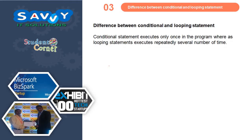The difference between a conditional statement and a looping statement: a conditional statement executes only once in the program, whereas a looping statement executes repeatedly several number of times. Here I will explain a small example for better understanding of this statement.